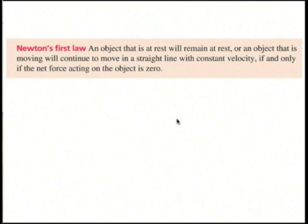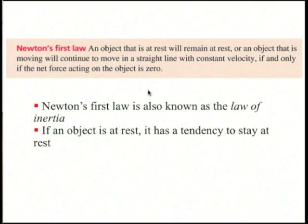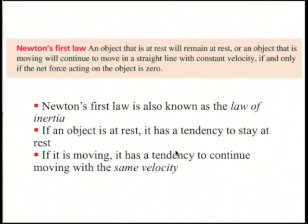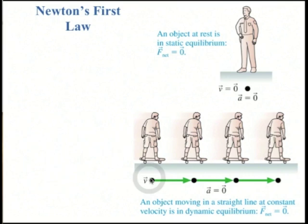Newton's first law states that an object at rest will remain at rest, or an object that is moving will continue to move in a straight line with a constant velocity, if and only if the net force acting on the object is zero. This is known as the law of inertia — if an object is at rest, it tends to stay at rest; if an object is moving, it tends to continue moving with the same velocity.